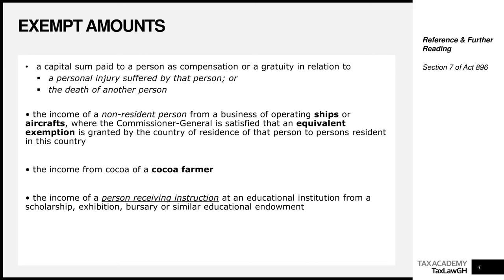The next is the income of a person who receives instruction at an educational institution and that income comes from a scholarship, exhibition, bursary, or similar educational endowment. If you are in school under a scholarship scheme and receive a monthly stipend, that payment is exempt from income tax. The reasoning is logical — you're a student who has been given a scholarship, likely due to financial hardship, so the law won't impose any extra burden by taxing that scholarship amount.